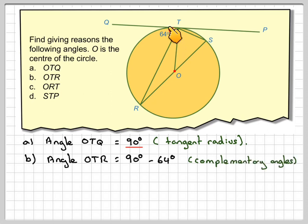OK, and because these here add up to 90 degrees, then 90 minus 64 will give me that angle there. The reason is that two angles that add up to 90 are called complementary angles. So that will be equal to 26 degrees.